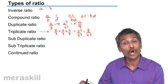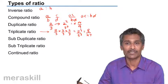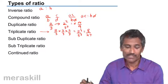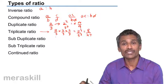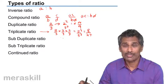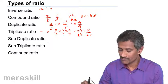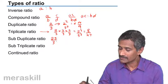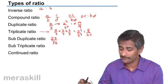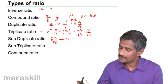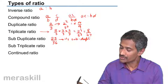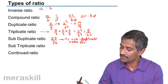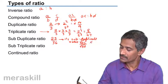Then you have sub duplicate ratio, which is the reverse of this. Sub duplicate ratio means the ratio which on duplicating gives the given ratio. For example, suppose you have 25 by 36 - its sub duplicate ratio would be square root of 25 upon square root of 36, that is 5 by 6.